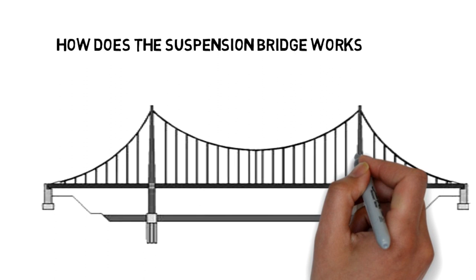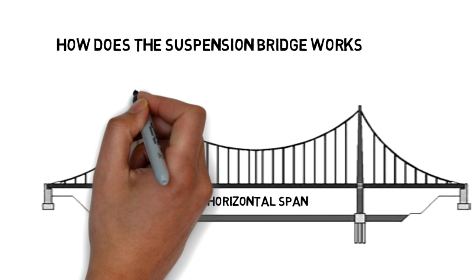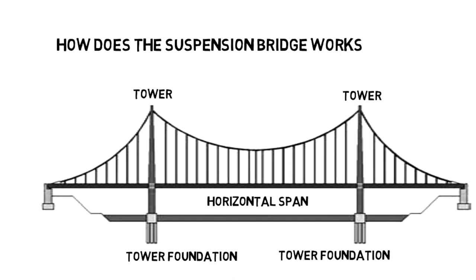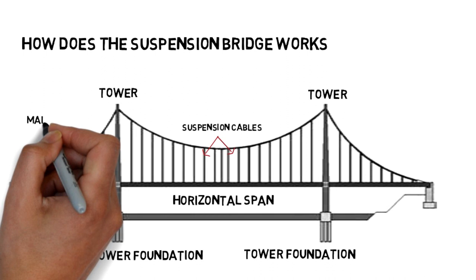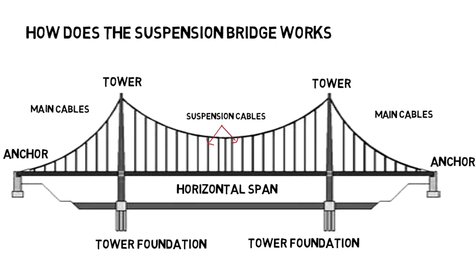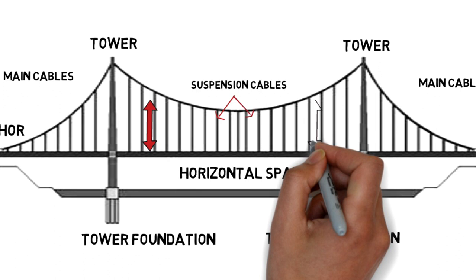Moving on to how does the suspension bridge work. The suspension bridge consists of a horizontal span with towers connected, and the towers have their tower foundations. It contains suspension cables which are attached to the horizontal span vertically. The suspension cables are attached to the main cable, and the main cable is attached to the anchors at the ends.